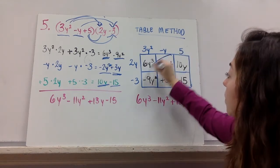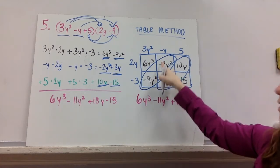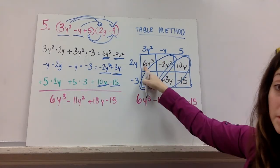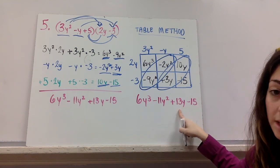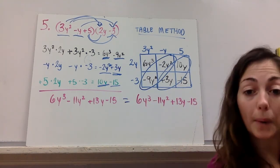And then you combine the things that are the same. And you notice 6y cubed minus 11y squared plus 13y minus 15. Hey, it's the same thing. So either way. Cool.